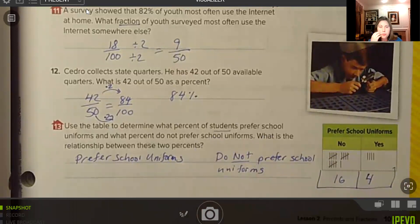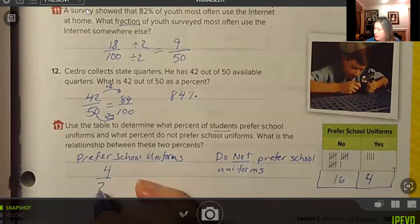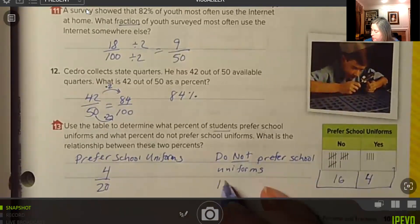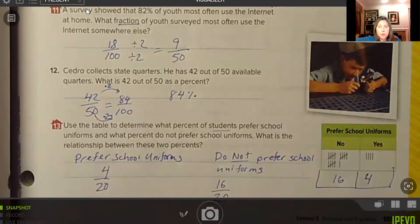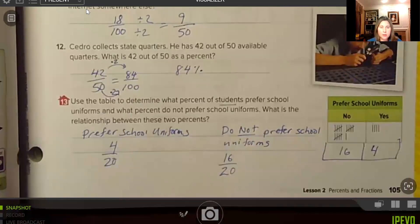And so students who prefer school uniforms were four out of 20. So four out of 20, and then students who do not prefer school uniforms, that's 16 out of 20. And then we want to write these as percents.